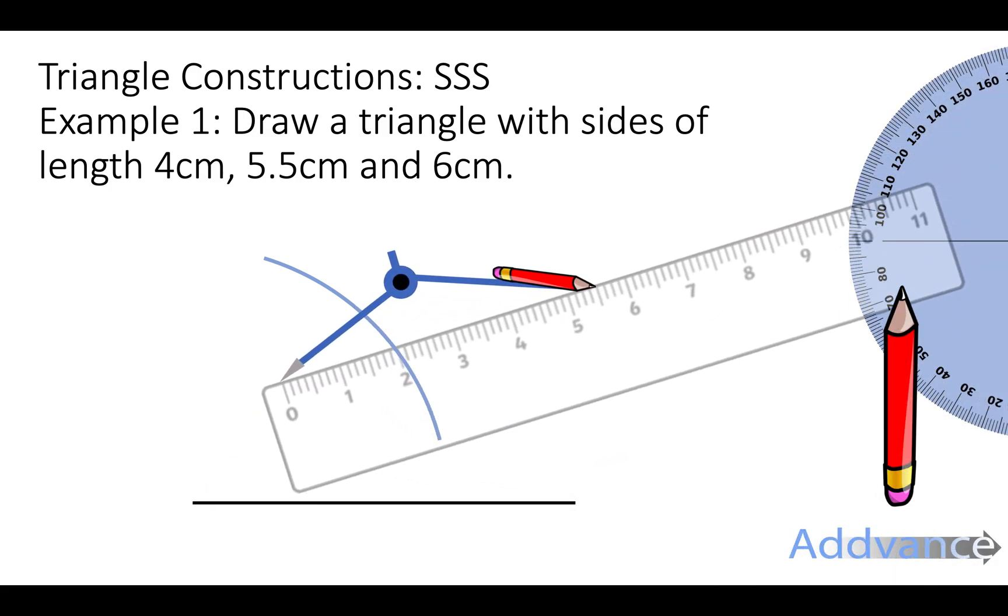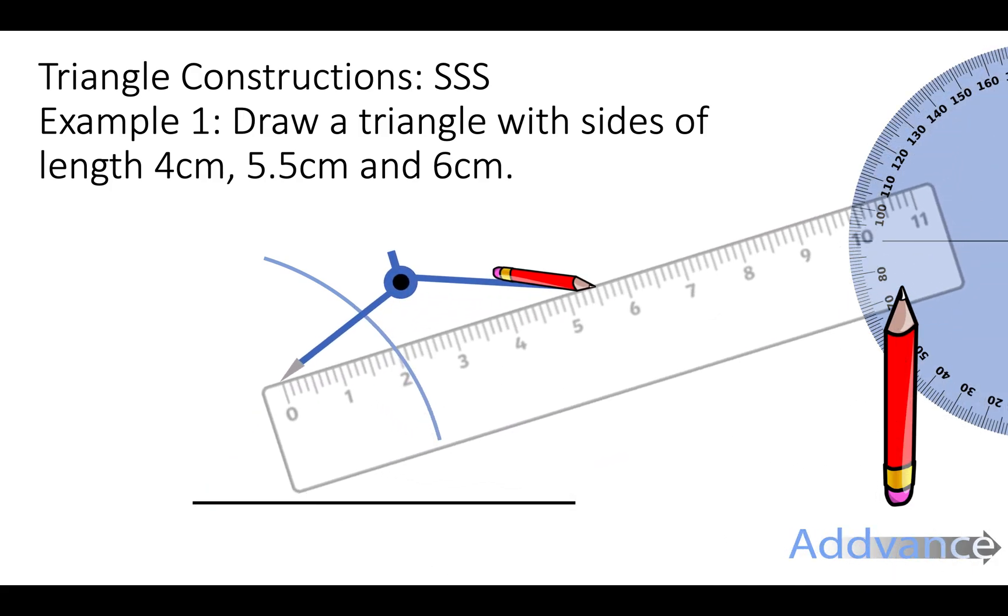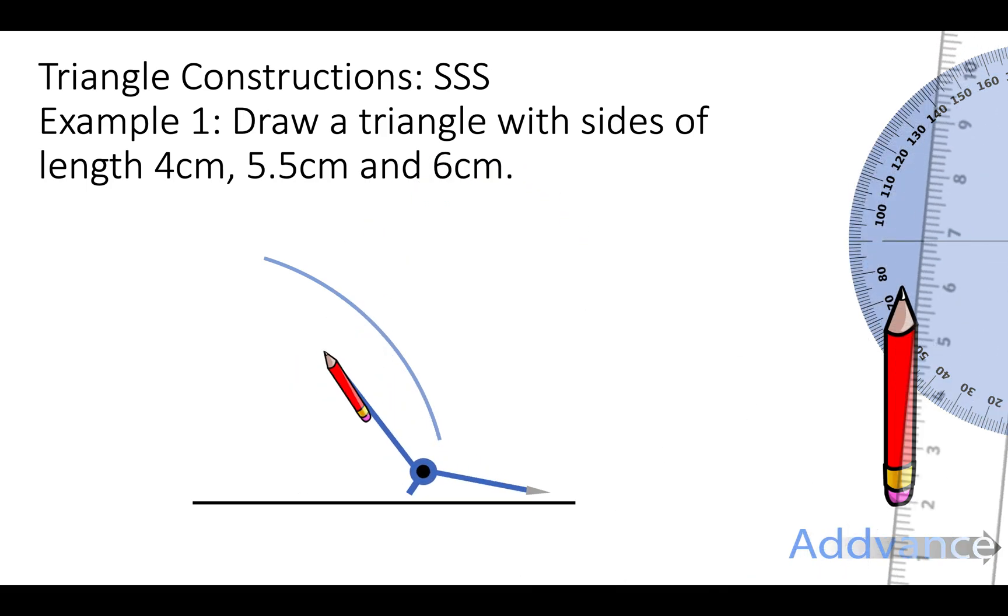Then we do the other line and we set it to be 5.5cm with our ruler. And we place the needle of the compass on the tip of the line and we draw a nice arc like that. These two arcs will cross over and they'll cross over at the perfect point where the lines of the triangle must meet.